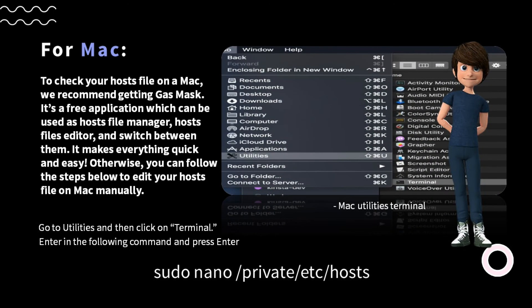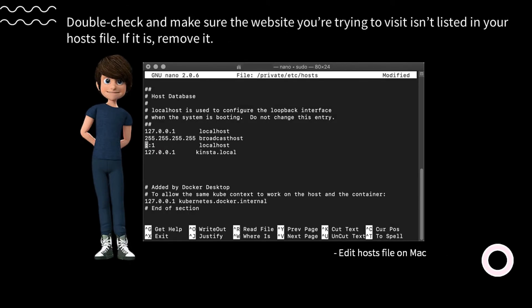For Mac, to check your hosts file, we recommend getting Gas Mask — a free application which can be used as a hosts file manager and editor. Otherwise, go to Utilities and click Terminal, then enter the command: sudo nano /private/etc/hosts. You will most likely be prompted for your administrator password. Double check that the website you're trying to visit isn't listed in your hosts file, and if it is, remove it.